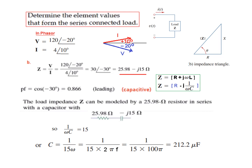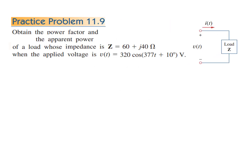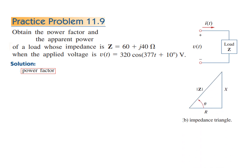Now let's solve Practice Problem 11.9. Here we need to find the power factor and apparent power. The load impedance Z and the applied voltage are given. To find the power factor we need the angle theta (theta_V minus theta_I), which can be found by converting Z from rectangular to polar form.